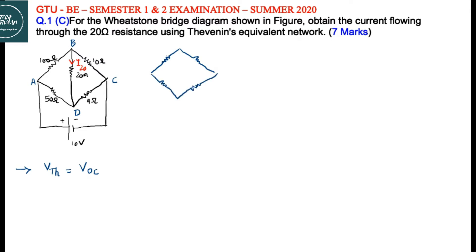100 ohm resistor, this is 10 ohm resistor, 4 ohm, 50 ohm, and it is connected to the supply. We will remove the 20 ohm resistor from BD. So let us simplify this diagram. We will redraw the diagram like this.